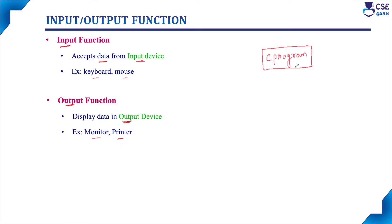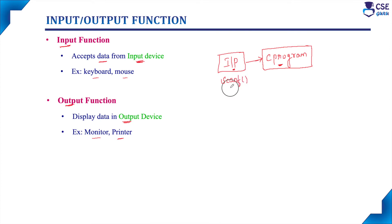To solve any problem or to perform any task, the programmer will write a C program. To execute this C program, appropriate input is required. We can provide input to the computer with the help of input functions. For example, scanf is an input function — it helps to provide input to C programs with the help of input devices.